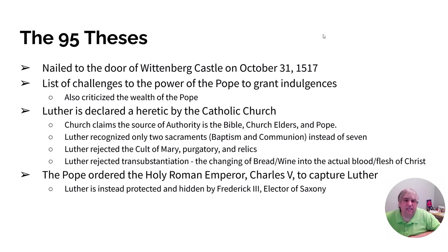On October 31st, 1517 — yes, that was Halloween — Luther posts a list of 95 issues he has against the church and the pope on the door of Wittenberg Castle. He criticizes the pope, criticizes the church, and says the pope is just worried about money. As a thank you for his efforts, he is declared a heretic by the Catholic Church, which refutes everything Luther believes in.